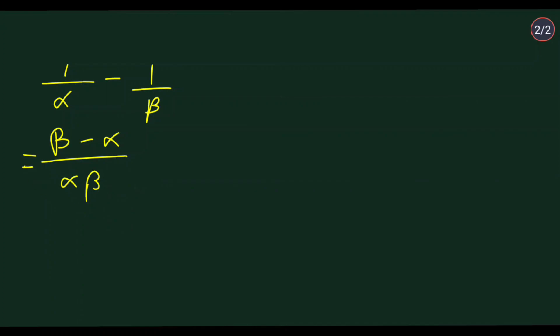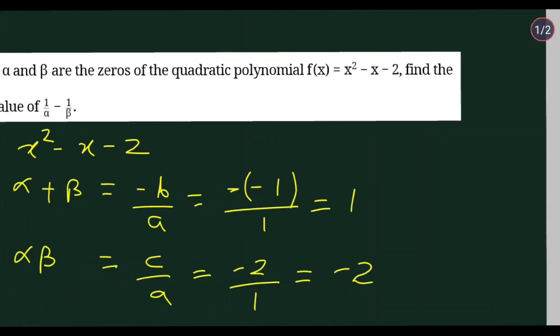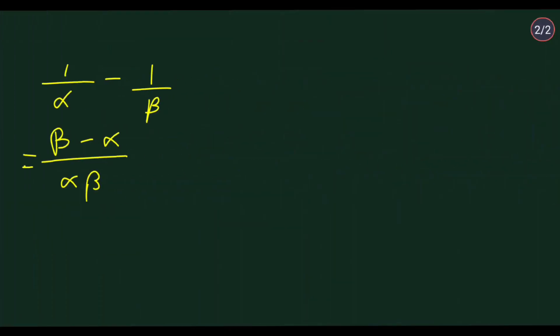Now, we have the value of alpha beta, that is minus 2, but we don't have beta minus alpha. So we have to find that value ourselves. For beta minus alpha, we do squaring.